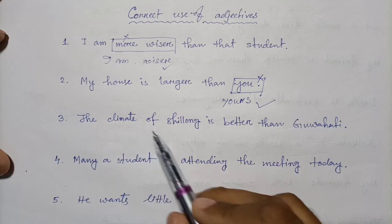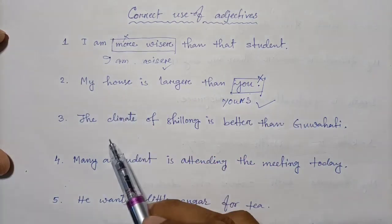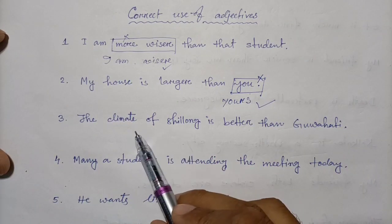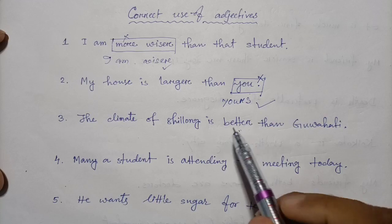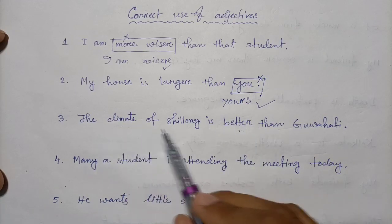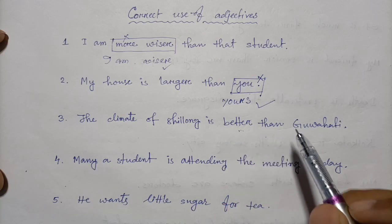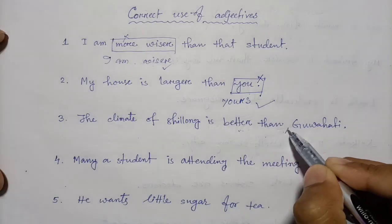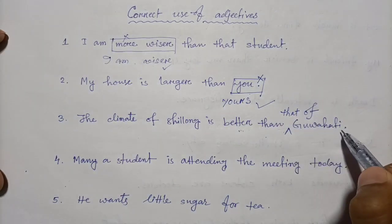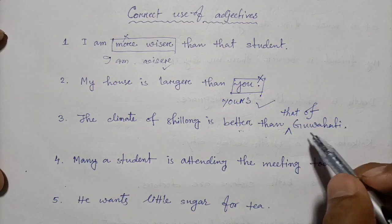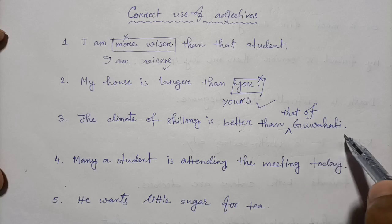Question number three: 'The climate of Shillong is better than Gauhati.' This is wrong. The correct sentence is: 'The climate of Shillong is better than that of Gauhati.' You must use 'that of' when comparing similar things like climate.